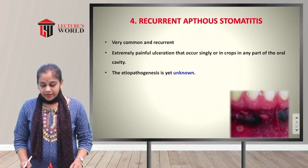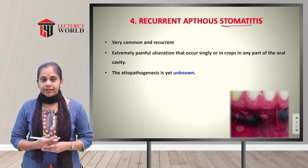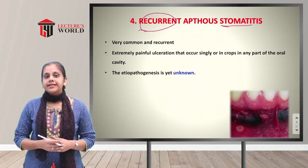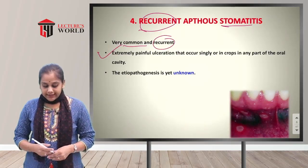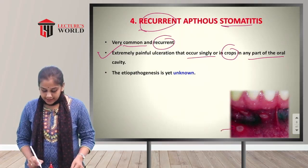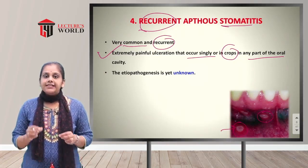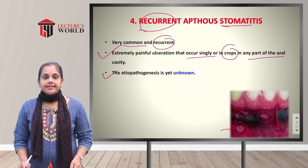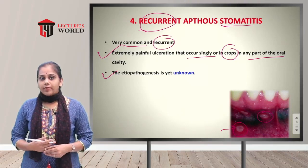The fourth condition is recurrent aphthous stomatitis. Stomatitis means infection or inflammation of the mucous membrane of the oral cavity. 'Aphthous' refers to small, superficial ulcers over the skin or mucous membrane, and 'recurrent' means it occurs frequently. These are extremely painful ulcerations that occur singly or in groups in any part of the oral cavity. The etiopathogenesis is yet unknown.